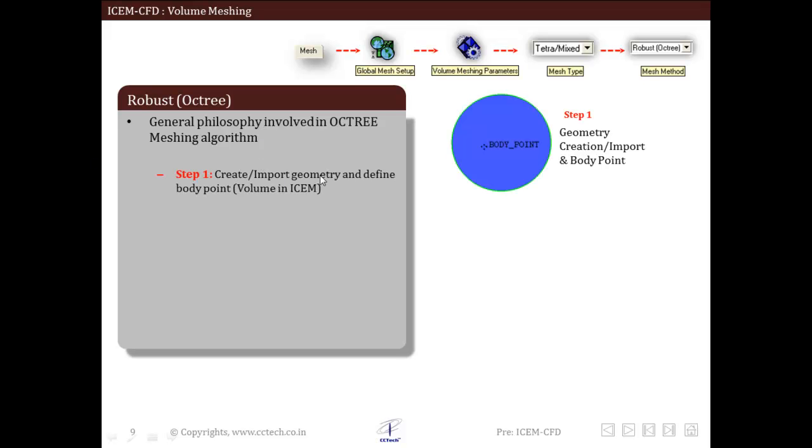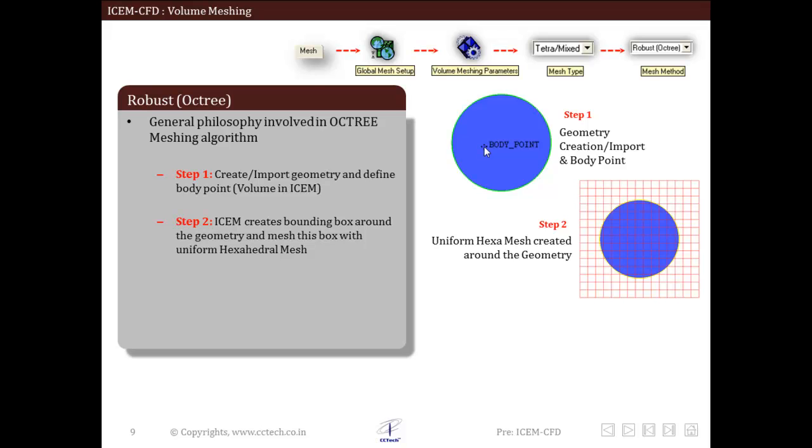The first step, we import or create the geometry and define body points within the volume. Body points are nomenclature or entities that are used to define bodies. Within step 2, ICEM creates a bounding box around the geometry and meshes this box with uniform hexahedral mesh.